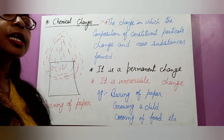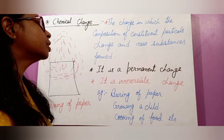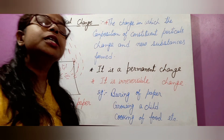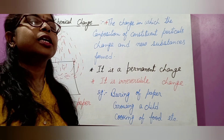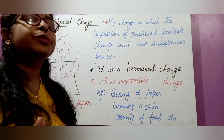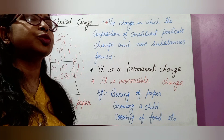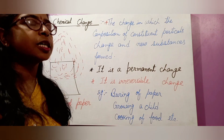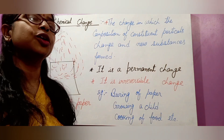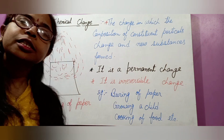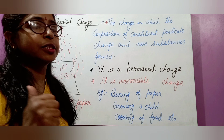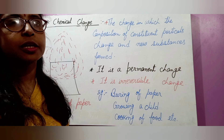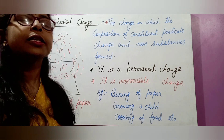Other examples of chemical change are burning of paper, growing of a child, and cooking of food — these are all chemical changes. Children, comment below two examples of physical change and two examples of chemical change — that is your work. If you like this video, please give it a like, subscribe to this channel, and share this video with your friends. Thank you.